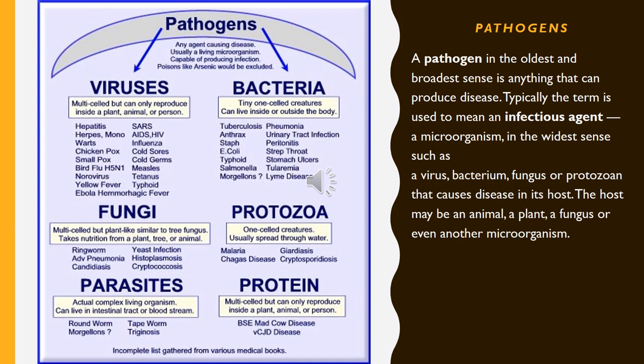A pathogen, in the oldest and broadest sense, is anything that can produce disease. Typically the term is used to mean an infectious agent — a microorganism such as a virus, bacterium, fungus, or protozoan — that causes disease in its host. The host may be an animal, a plant, a fungus, or even another microorganism.